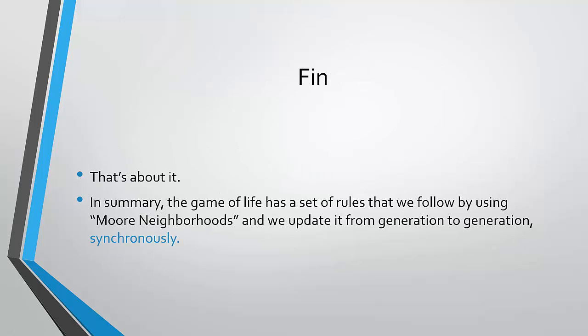So that's actually about it. That's the Game of Life in a nutshell. In summation, the Game of Life has a set of rules that we follow by using Moore neighborhoods, and we update it from generation to generation synchronously on a Cartesian grid. Basically, graph paper. So thanks for watching. And I will begin the next tutorial sometime this week that actually begins going over the programming side of things. So have a nice day.